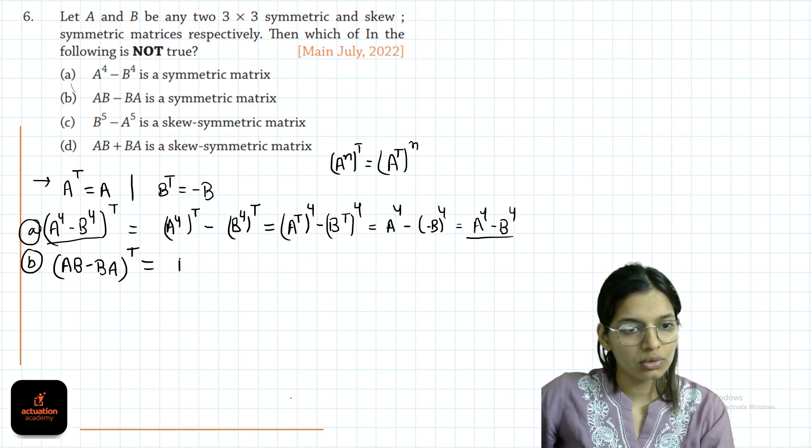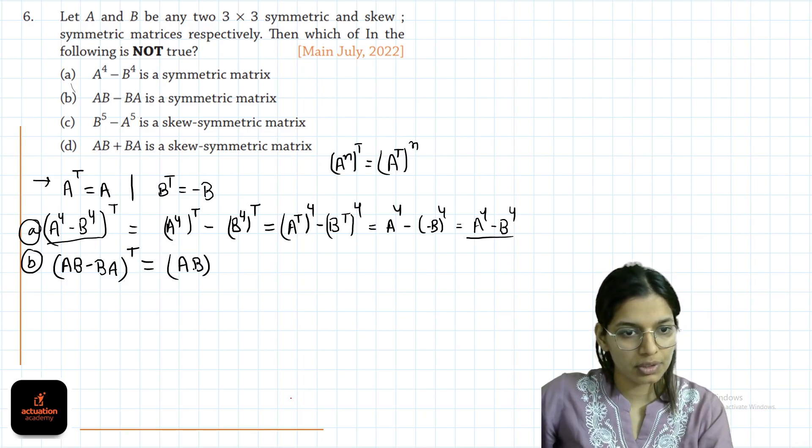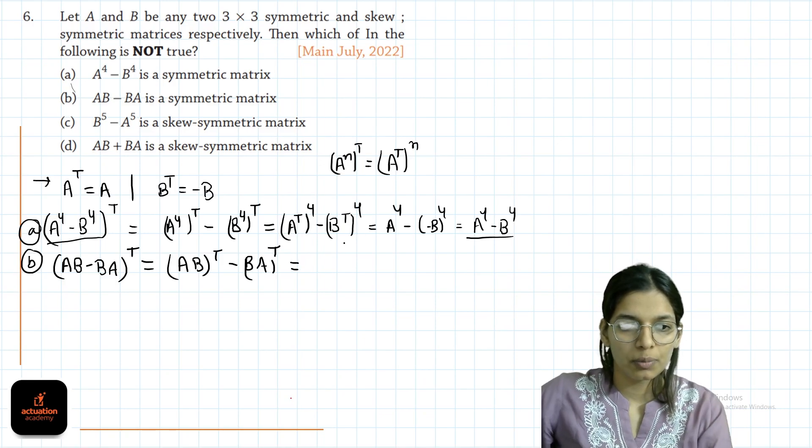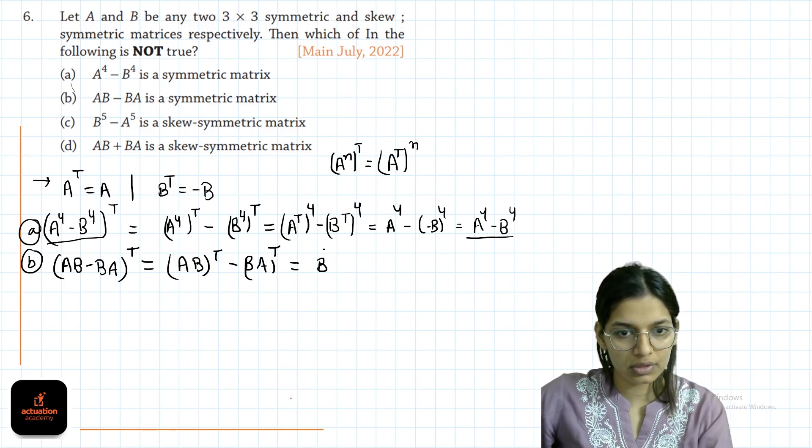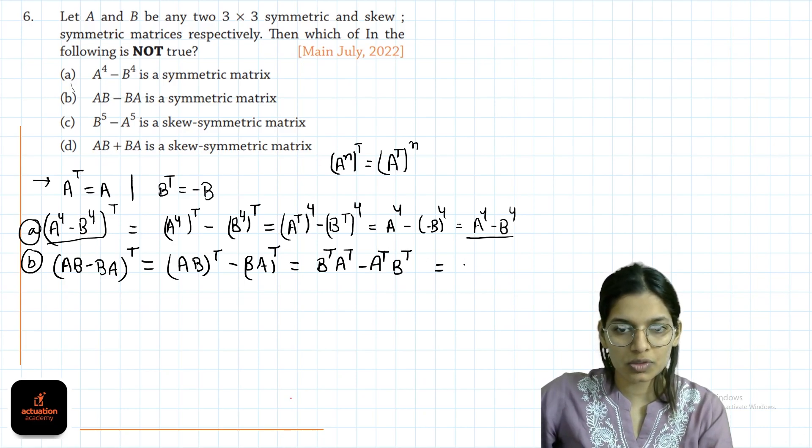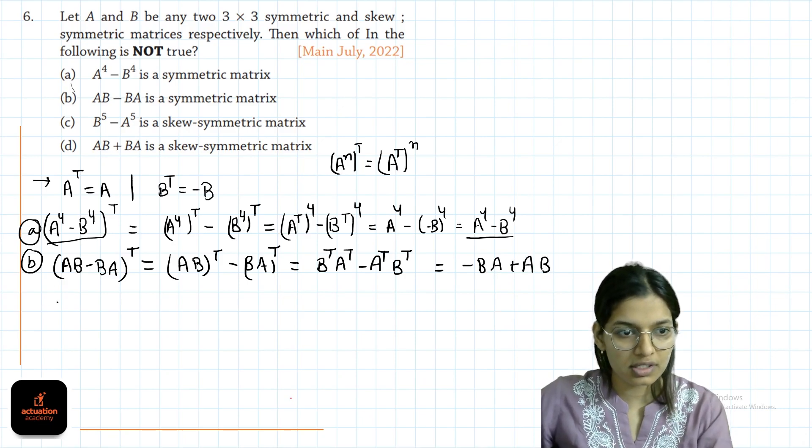Transpose will be AB transpose minus BA transpose and that will be product ka transpose reverse: B transpose A transpose minus A transpose into B transpose. B transpose is minus B, so minus BA minus minus AB equals minus BA plus AB which is nothing but minus the same matrix. This is also correct.